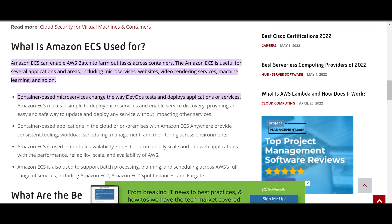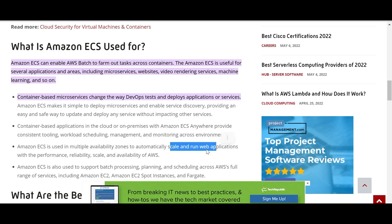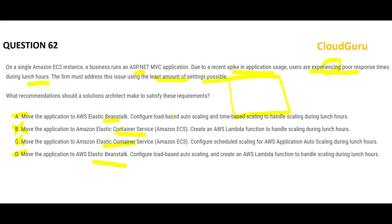ECS has a very different use — it is used to create microservice-style applications and works well for DevOps and testing, but it doesn't automatically scale up and down in the simplest way. ECS can be configured across multiple Availability Zones, but the key difference here is the question asks for the least amount of settings possible. With the least configuration, Elastic Beanstalk has an edge over ECS.